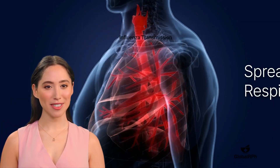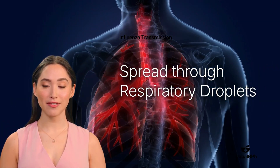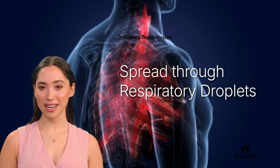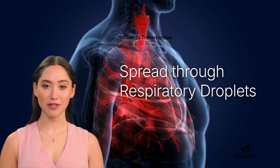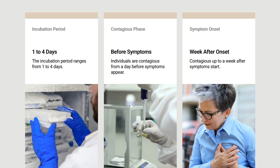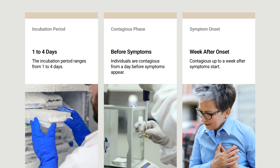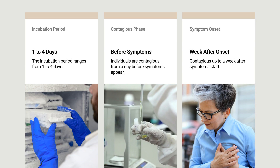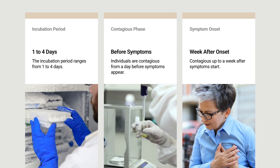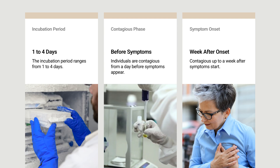Influenza spreads mainly through respiratory droplets when an infected person coughs or sneezes. It can also spread by touching contaminated surfaces and then touching the face. The incubation period is typically one to four days, with an average of two days. Infected individuals can spread the virus from about one day before symptoms appear to five to seven days after onset.